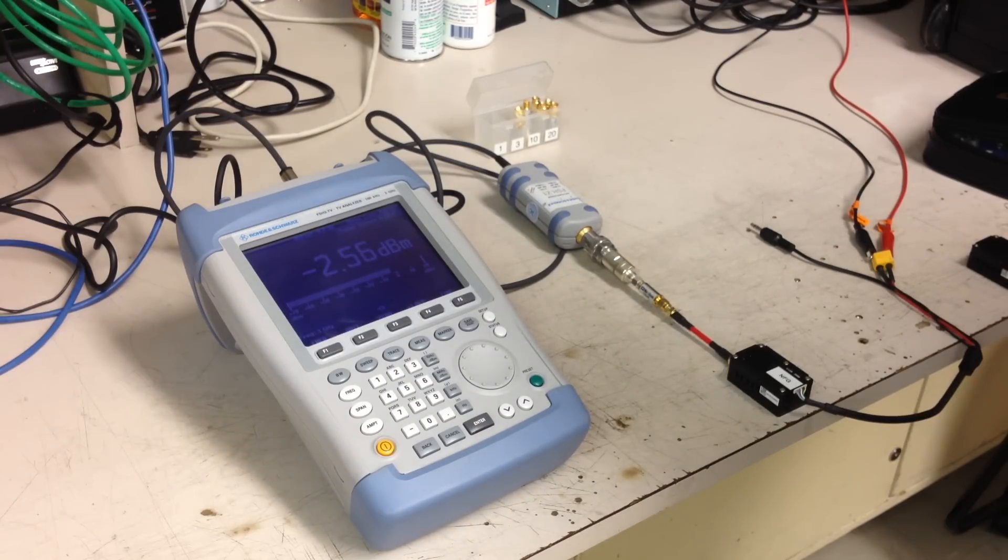Alright, it's putting out negative 2.5 dBm and I have a 10 dB pad on here. So effectively this is doing nothing, it's not transmitting any RF. Let's switch it with a good one.